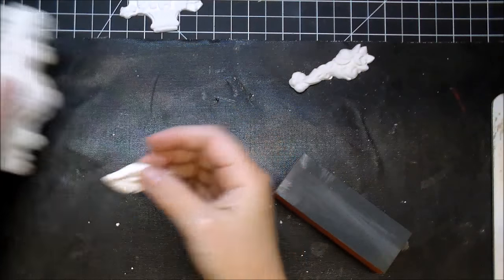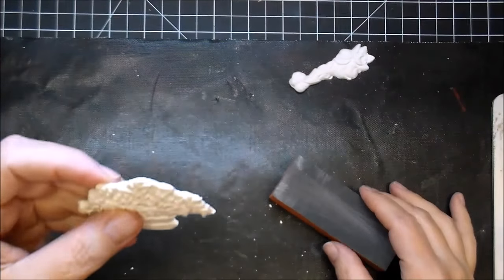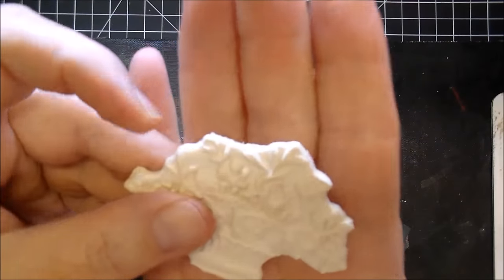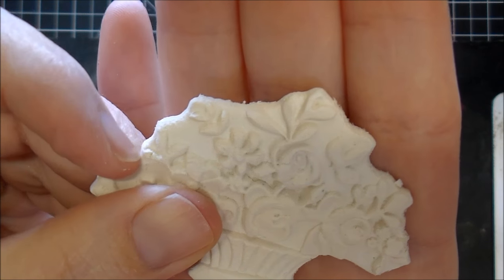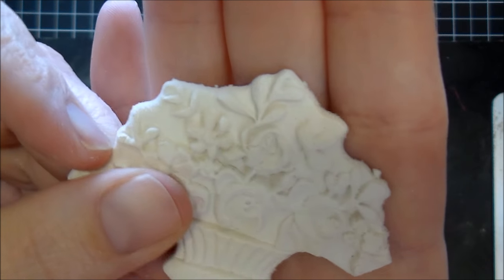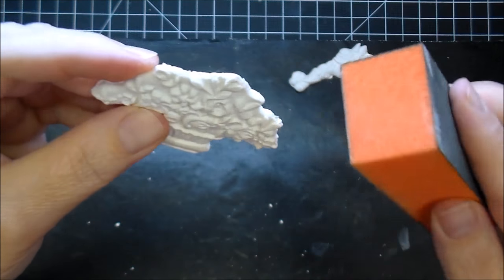And I'll give you one more example here, because this one, you can see right there, there's just little pieces that are overhanging.